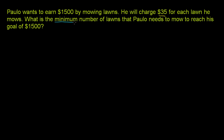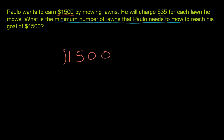We need to figure out the minimum number of lawns that Paulo needs to mow. Whatever that number is, that number times $35 — because that's how much he's going to get per lawn — needs to be greater than $1,500. So to figure out that number, let's divide $1,500 by 35. Maybe it goes evenly, and that'll be the number of lawns he needs to mow.